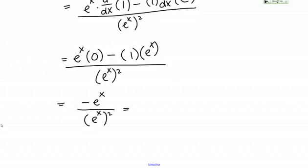Now this is something I can reduce because I have one factor of e to the x on top, two factors on the bottom. So I'm going to reduce this to negative 1 over e to the x. So that's my answer.